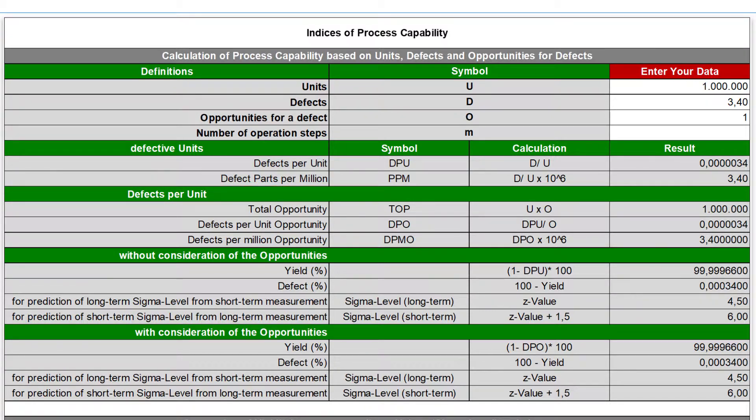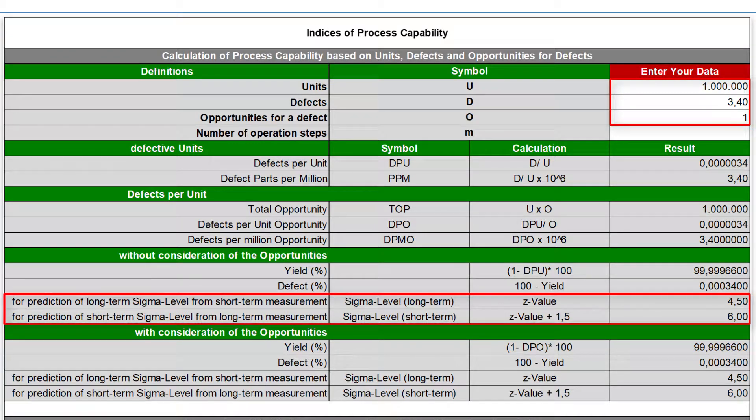I already introduced the well-known case of 3.4 defects in 1 million units, with one opportunity for a defect per unit. This leads to a long-term sigma level of 4.5 and a short-term level of 6 sigma.